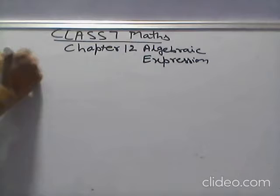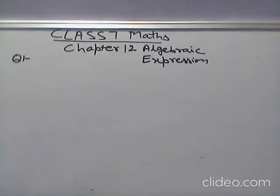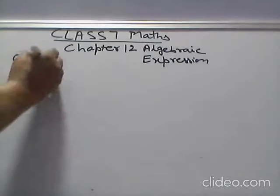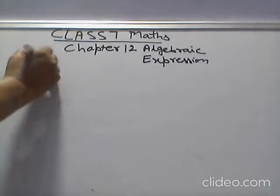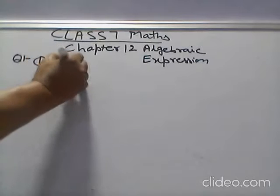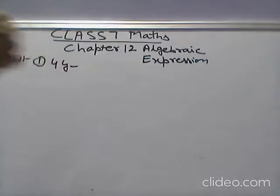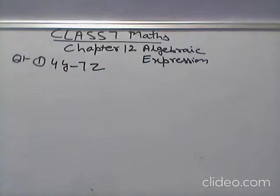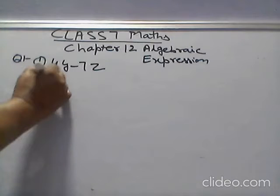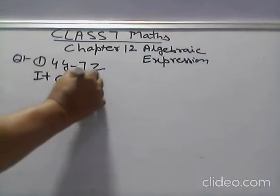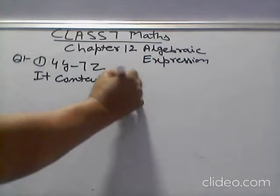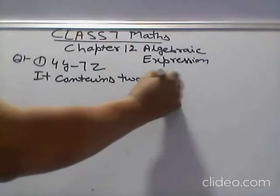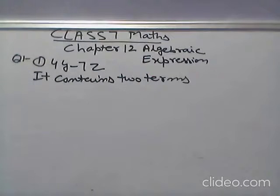Question number 1. Classifying into Monomial, Binomial and Trinomial. 4y-7z. It contains two terms. So it is a Binomial.